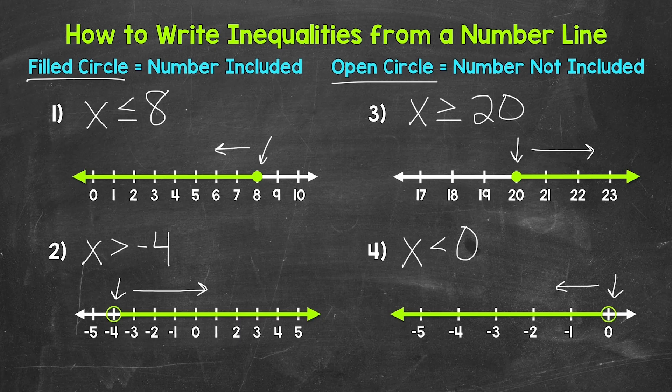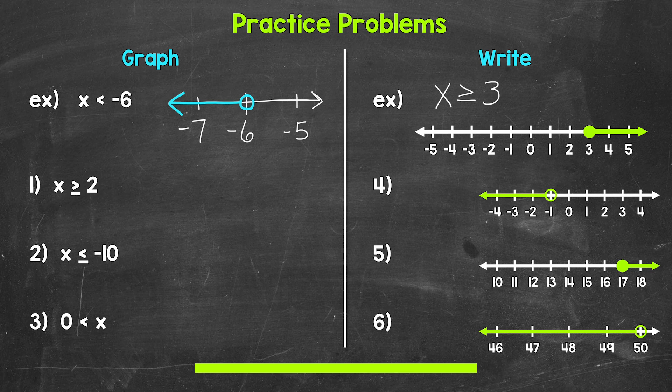So there are all of our example problems. Let's move on to some practice problems that you can try on your own. Have paper and a pencil ready. I'll give you five minutes and then we will go over the answers. Feel free to press pause if you need more time, or jump ahead to the answers whenever you are ready. For numbers 1 through 3, graph the inequality on a number line. For numbers 4 through 6, write the inequality from each number line.